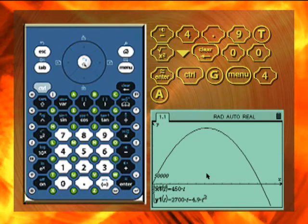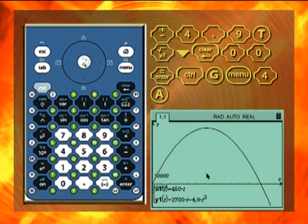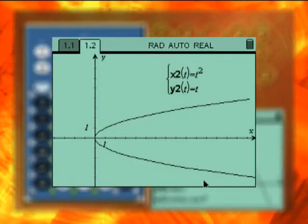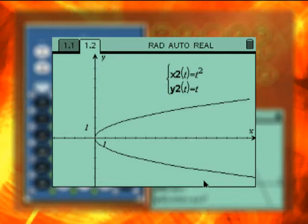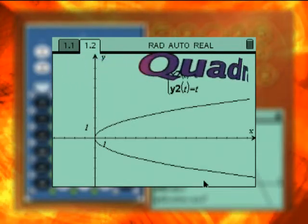Notice that this graph passes the vertical line test, so it is a function. But not all parabolas are functions. This parametric graph, while still a parabola, does not pass the vertical line test. And this is why conic sections are known as quadratic relations.